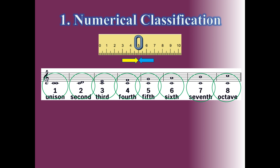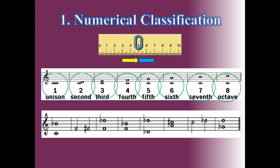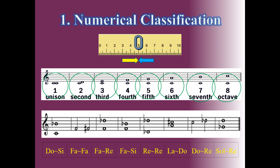Now answer the following intervals numerically. First, let's find the tone names from the lower to higher notes, ignoring chromatic signs. From DO to SI: DO, RE, MI, FA, SOL, LA, SI — there are seven tone names. The answer is the seventh interval.